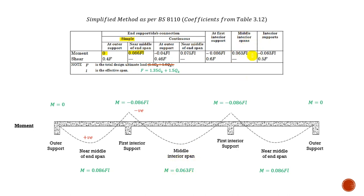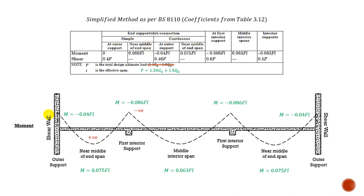Since the outer support has zero bending moment, I must also take the near middle of end span bending moment to be 0.086 FL. The first interior support bending moment and the middle interior span are taken accordingly. Somebody might ask: what's the point of having this continuous end condition? Basically, if you have a shear wall as an outer support — and we know the shear wall is very stiff, even stiffer than the columns — it will prevent any kind of rotation. That means it is fair to go for the continuous end connection, taking the bending moment there as a negative value, a hogging moment, and I must put top reinforcement there.